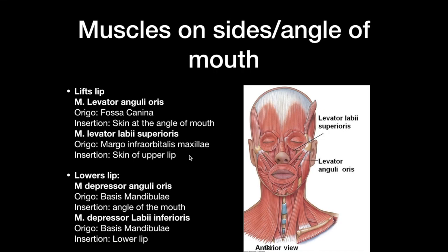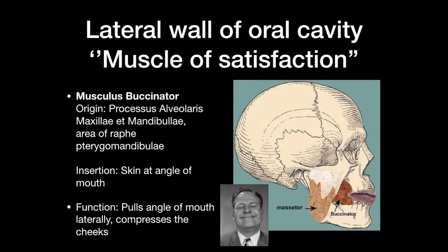The next muscle is the lateral wall of the oral cavity, also called the muscle of satisfaction — musculus buccinator. It originates from the processus alveolaris maxillae and mandibulae, in the area of the raphe pterygomandibularis. It inserts at the skin of the angle of the mouth. The function is to pull the angle of the mouth laterally and compress the cheeks.